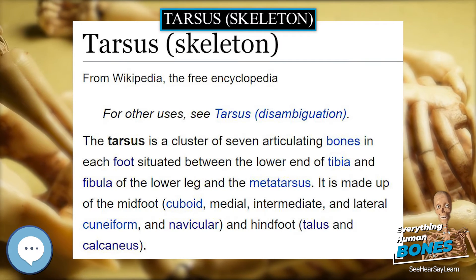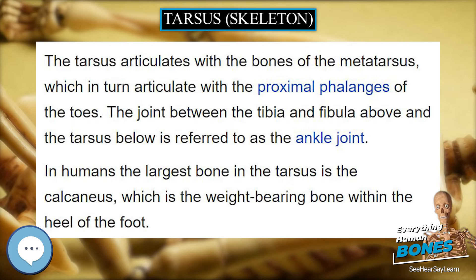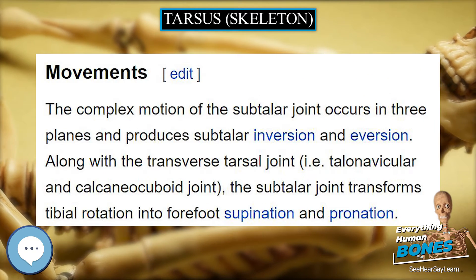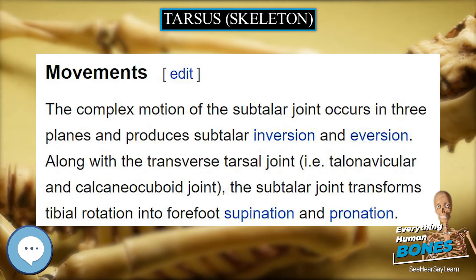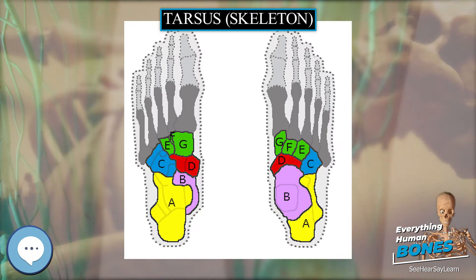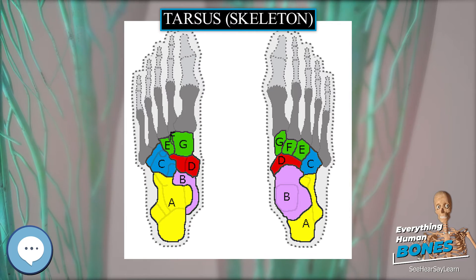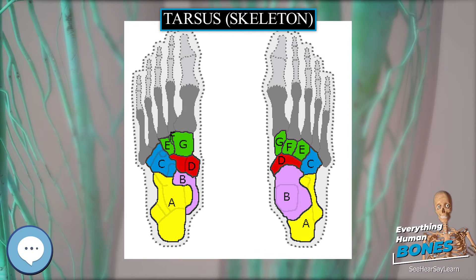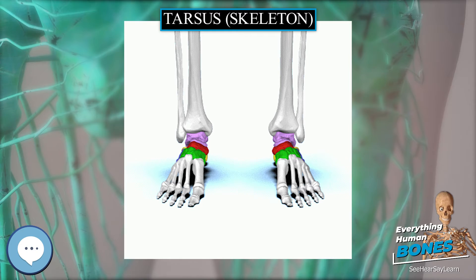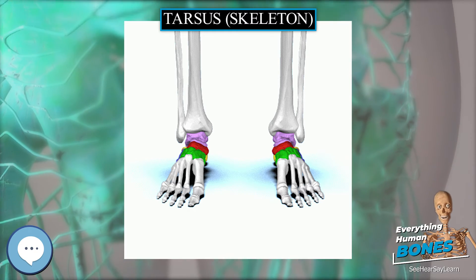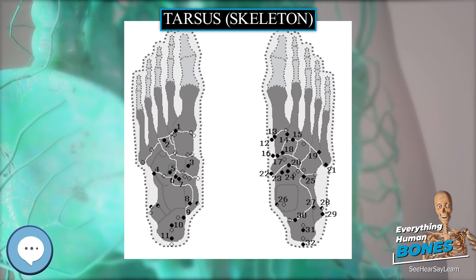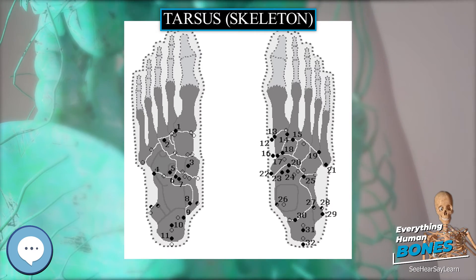Other animals. In primitive tetrapods, such as Trematops, the tarsus consists of three rows of bones. There are three proximal tarsals — the tibiale, intermedium, and fibulare — named for their points of articulation with the bones of the lower limb. These are followed by a second row of four bones referred to as the centralia, and then a row of five distal tarsals, each articulating with a single metatarsal.